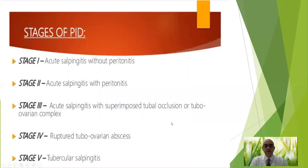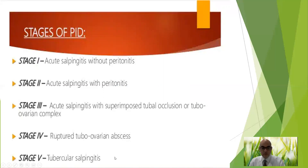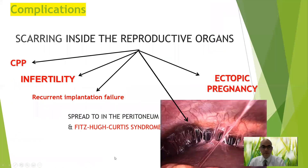PID has stages: Stage 1 — acute salpingitis without peritonitis. Stage 2 — acute salpingitis with peritonitis. Stage 3 — acute salpingitis with superimposed tubal occlusion or tubo-ovarian complex. Stage 4 — ruptured tubo-ovarian abscess. Stage 5 — tubercular salpingitis.